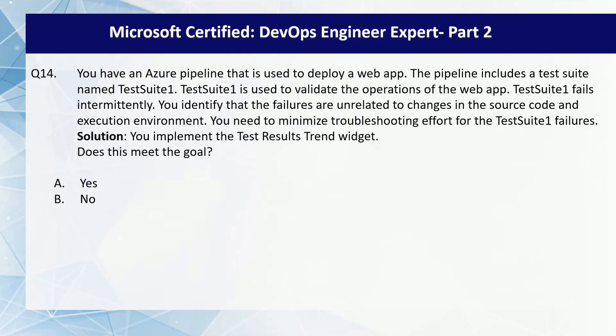Question number 14 of the series. You have an Azure Pipeline used to deploy a web app. The pipeline includes a test suite named Test Suite 1, which is used to validate the operations of the web app. Test Suite 1 fails intermittently, and you identify that the failures are unrelated to changes in the source code and execution environment. You need to minimize troubleshooting effort for the Test Suite 1 failures. The proposed solution is to implement the test results trend widget. Does this meet the goal?